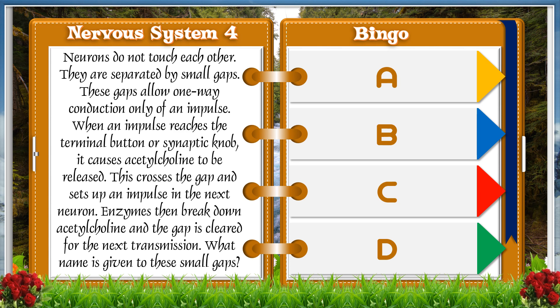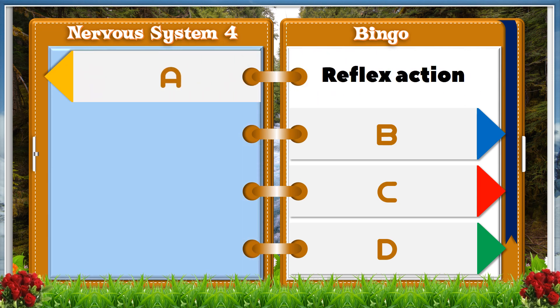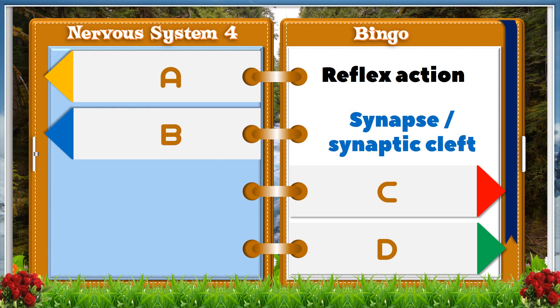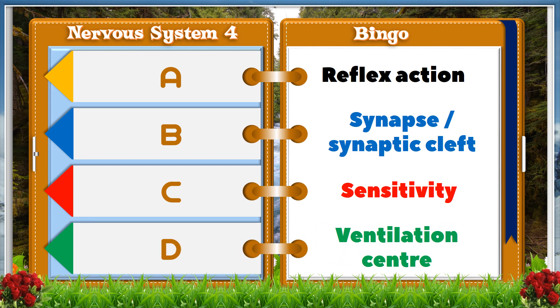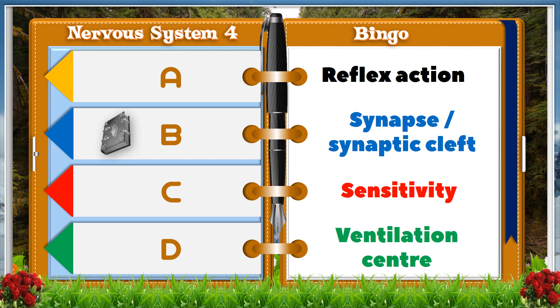What name is given to these small gaps? A. Reflex action. B. Synapse or synaptic cleft. C. Sensitivity. D. Ventilation center. And the answer is B. Synapse or synaptic cleft.